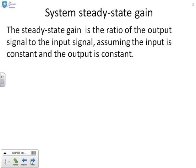So first of all, let's ask: what do we mean by system steady state gain? The steady state gain is the ratio of the output signal to the input signal, assuming that the input is constant and clearly the steady state output is constant. We'll draw a diagram here to show what we mean.